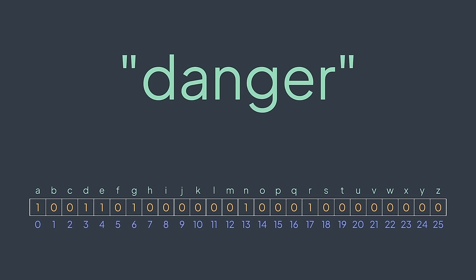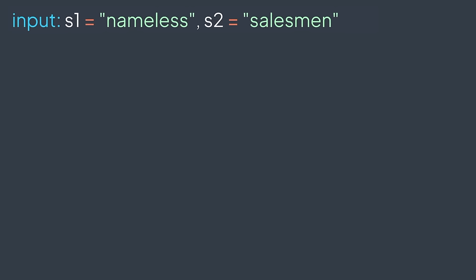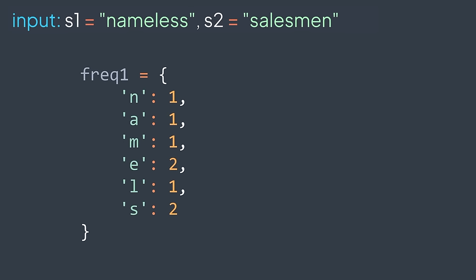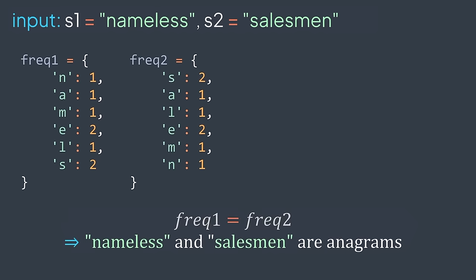The best structure for our problem is the hash table — the structure that maps unique keys to values. In our case, the key will be the character and the value the number of occurrences. For example, with 'nameless' and 'salesman', we build a hash table for each. They have the same keys with the same values, so they're equal — it means that 'nameless' and 'salesman' are anagrams.